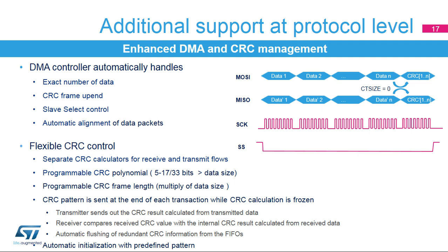During protocol-level communications, the DMA controller can be used to automatically handle the data flow events, the CRC calculations, and the updating of the FIFO threshold. In case of threshold control, the last odd data frame is correctly applied in packed mode when the number of frames is not aligned with the packet size. If the CRC is enabled, separate CRC calculators are used for the transmitter and receiver. The CRC calculation result is automatically appended at the end of each transfer by the DMA controller or by software control. Both CRC polynomial pattern and CRC frame length are programmable. The size of the polynomial is defined by its most significant non-zero bit, and it always has to be longer than the data size.